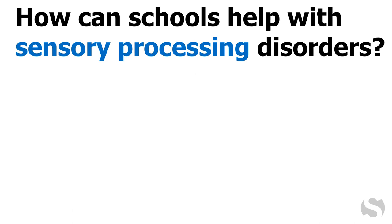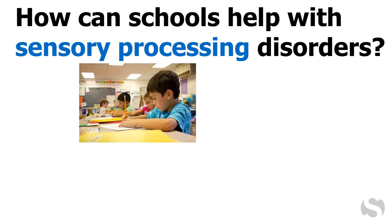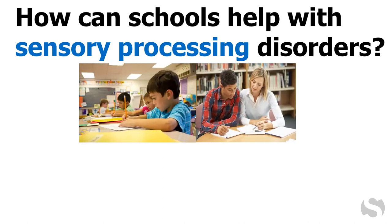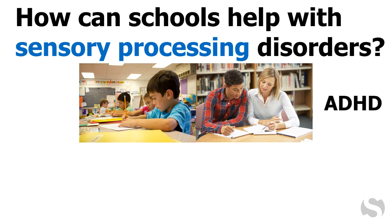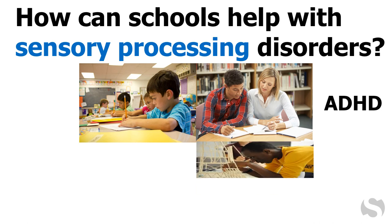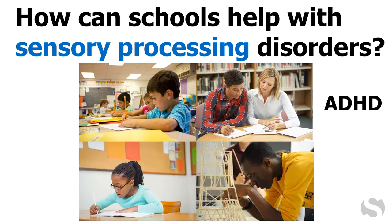Many accommodations are possible, such as strategically placing a student in the classroom space. Some accommodations also granted for students with ADHD may be helpful, such as reducing distractions and providing support for organization. Instructional accommodations might also be necessary — for example, students with sensory processing disorders are often running on fumes by the end of the day, so they should be taught difficult material earlier when they have more energy. Some assignments may need to be shortened or the format modified to give them the opportunity to do their best work.